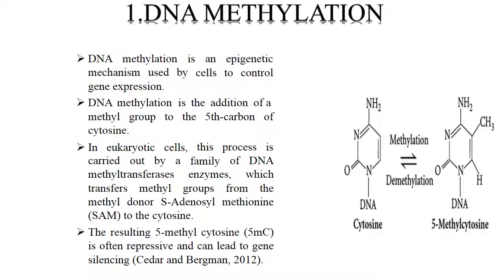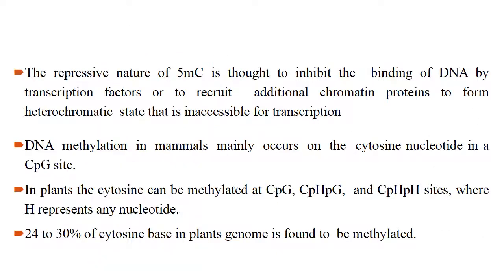Methylation is an epigenetic mechanism used by cells to control gene expression. It is the addition of a methyl group to the fifth carbon of cytosine. In eukaryotic cells, this process is carried out by a family of DNA methyltransferase enzymes which transfer methyl groups from the methyl donor S-adenosyl methionine (SAM) to the cytosine. The resulting 5-methylcytosine is often repressive and can lead to gene silencing, by inhibiting binding of transcription factors or recruiting chromatin proteins to form a heterochromatic state inaccessible for transcription.